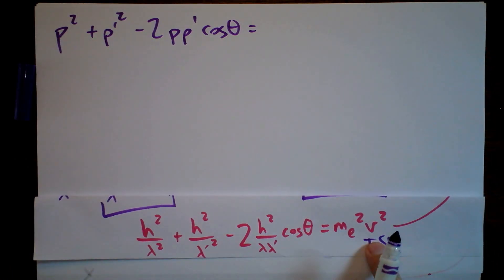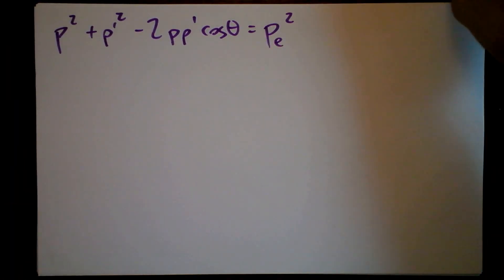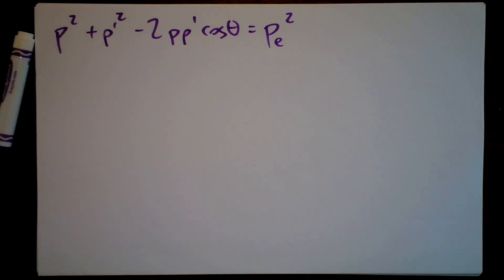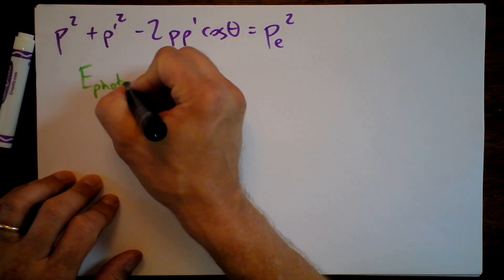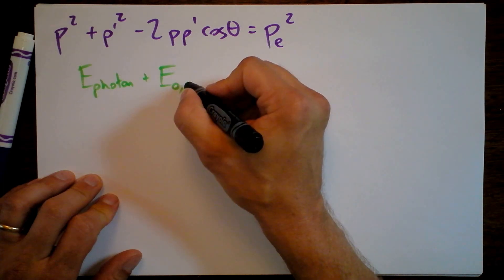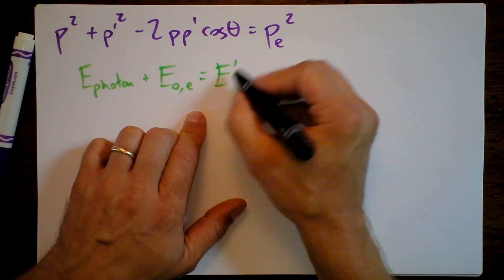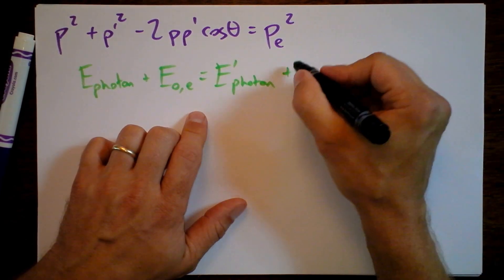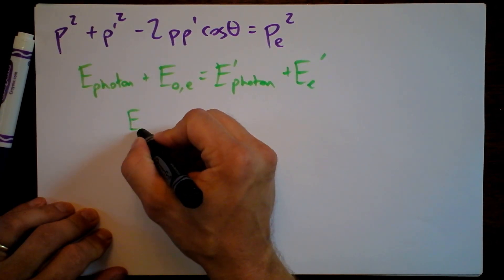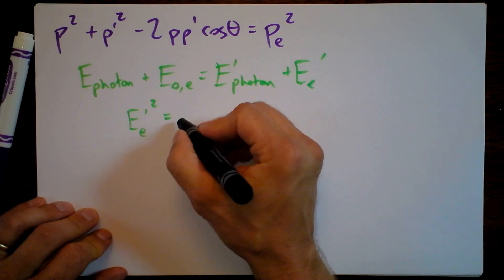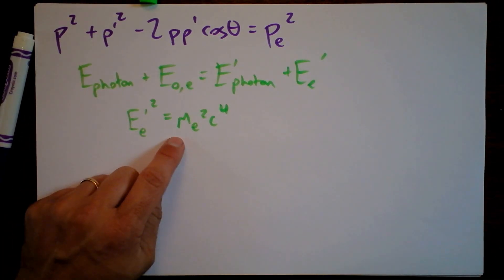On the right side, we'll use that term as is. Now we're going to take our energy equation, which is going to be a little different, so let's write that down in electric lime. Our energy equation says that the energy of the photon plus the initial rest energy of the electron equals the final energy of the photon — that scattered photon, which will be smaller — plus the final energy of the electron, which is greater.